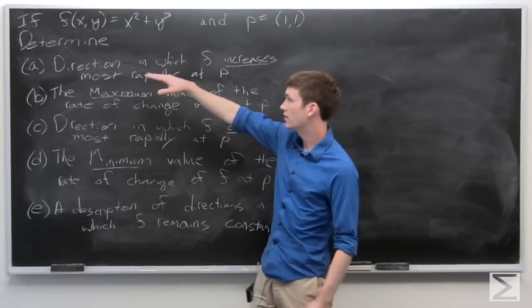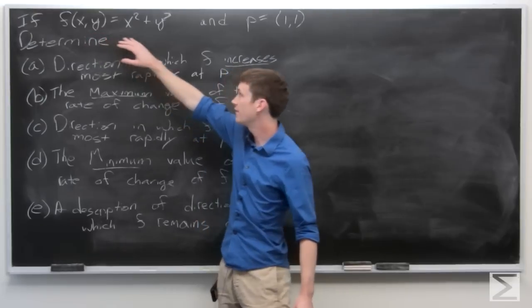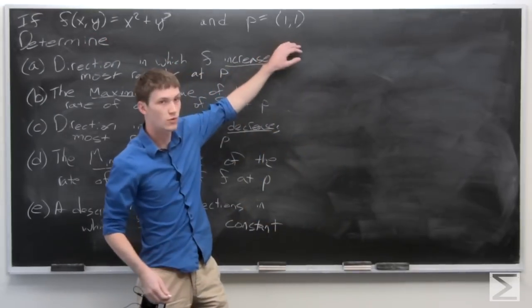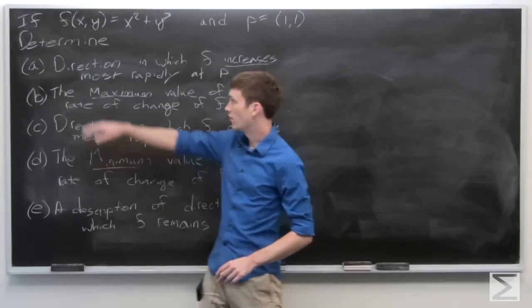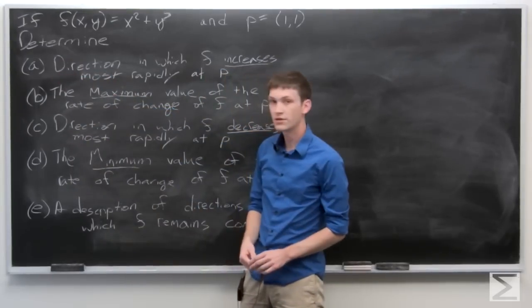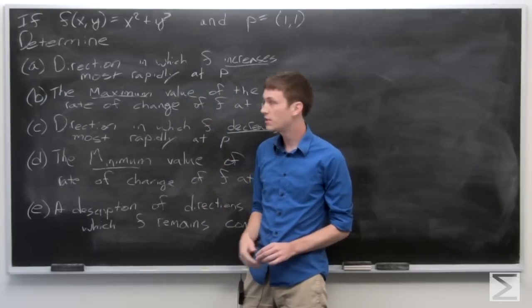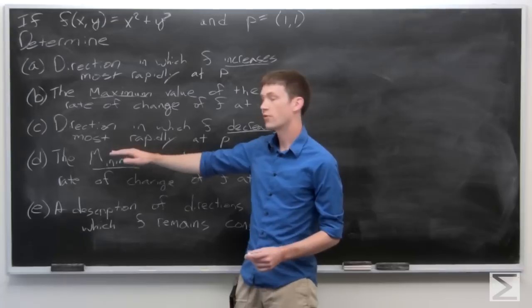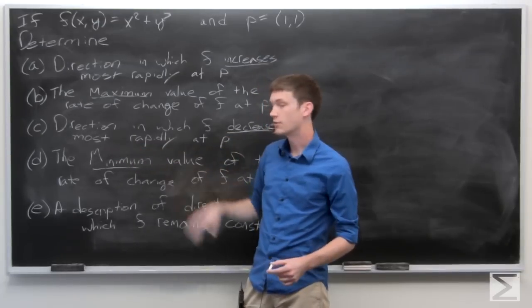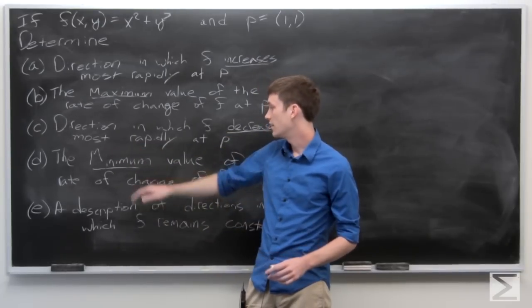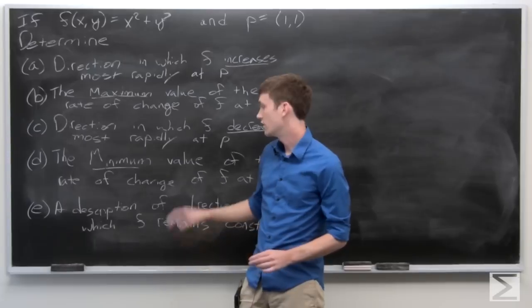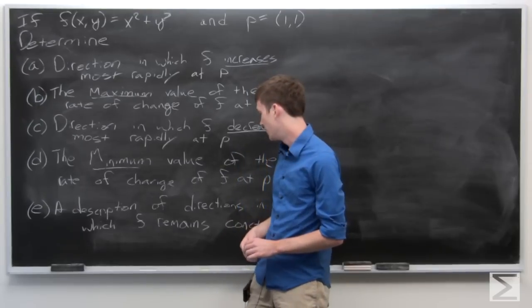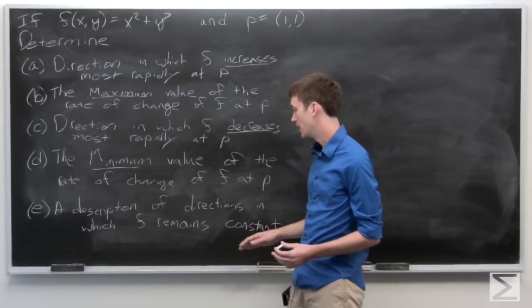In this problem, we're asked: given the function f(x,y) = x² + y³ and p = (1,1), to determine the direction in which f increases most rapidly at p, the maximum value of the rate of change of f at p, the direction in which f decreases most rapidly at p, the minimum value of the rate of change of f at p, and finally, a description of the directions in which f remains constant.